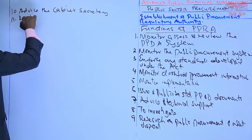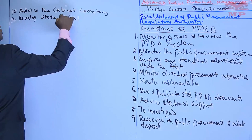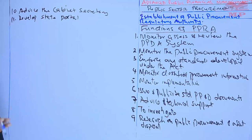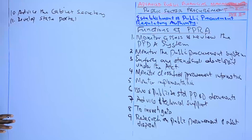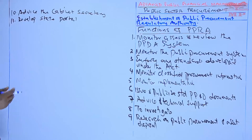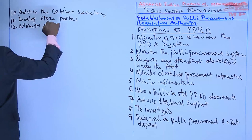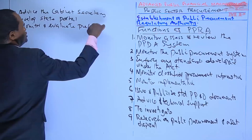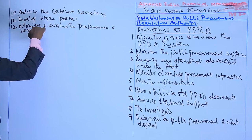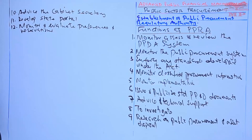Function eleven is to develop and manage the state portal on procurement and asset disposal and ensure that it is available and easily accessible. Function twelve is to monitor and evaluate preferences and reservations provided for under the Act and provide quarterly public reports.